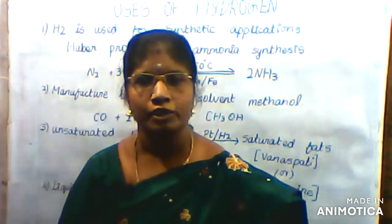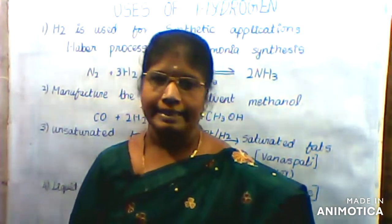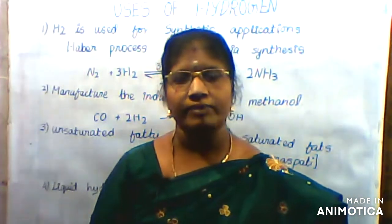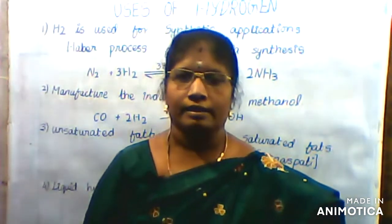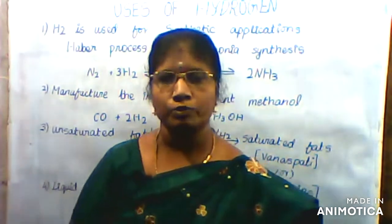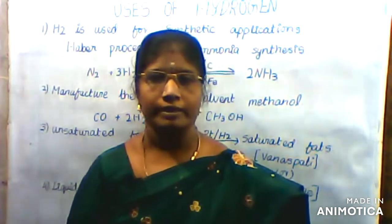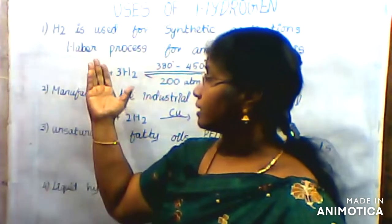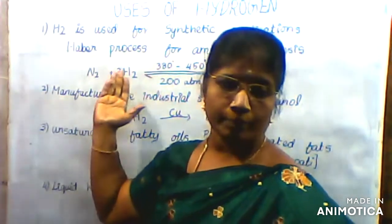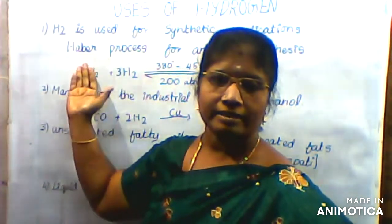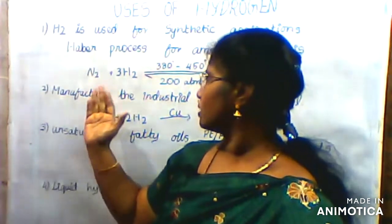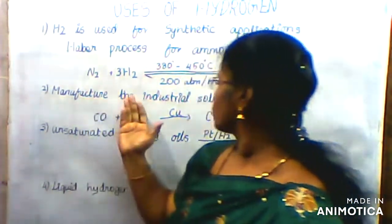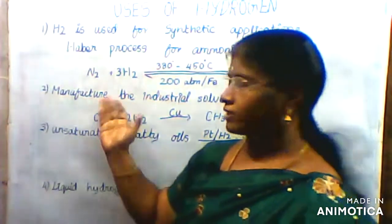Where is ammonia used? Ammonia is used to produce nitric acid. Nitric acid is used in explosive fuels, and ammonia is also used as an industrial solvent. Nitric acid is a very important application for you.